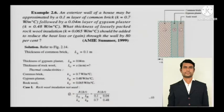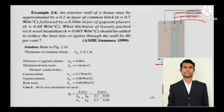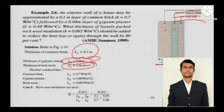Now we move to three layers of a composite wall. An exterior wall of a house may be approximated by a 0.1 meter layer of common brick (k = 0.7 watts per meter degree Celsius), followed by a 0.04 meter layer of gypsum plaster with its given K value. What thickness of loosely packed rock wool insulation should be added to reduce the heat loss or gain through the wall by 80 percent? The thickness of the rock wool is unknown and needs to be found. Thermal conductivities of all three elements are given.